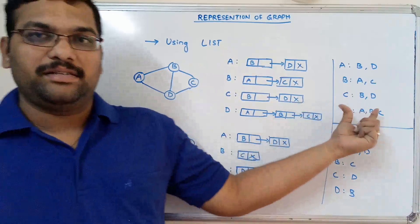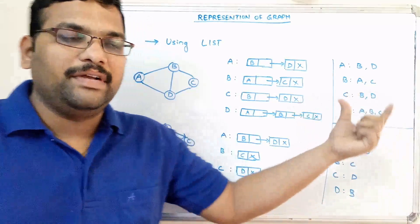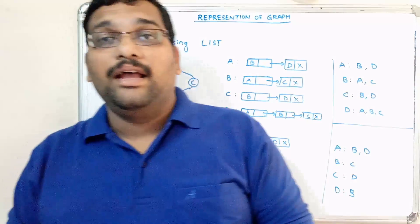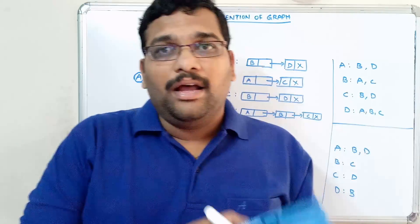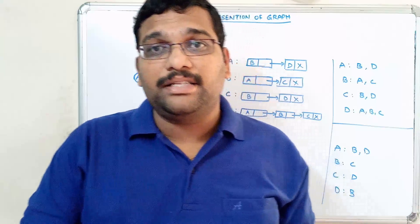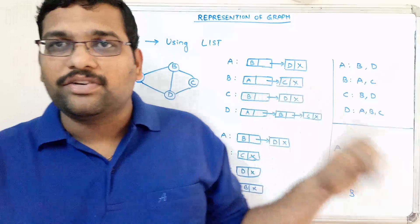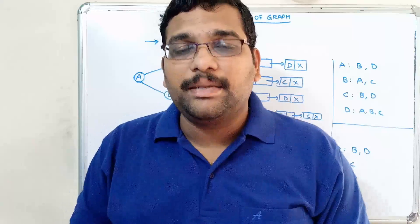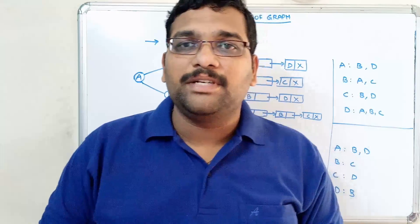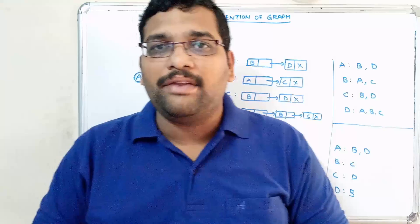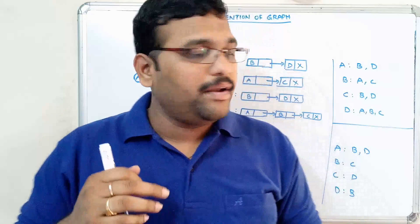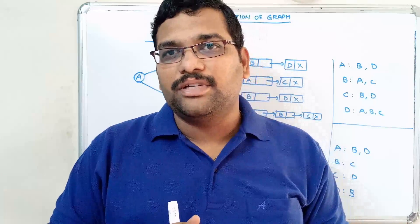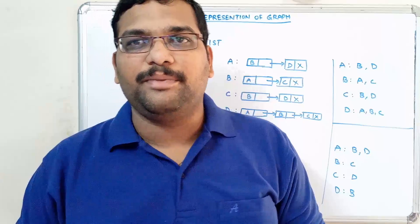So you can find these two ways. In different ways we can represent the graph using a list. This is how we can represent any graph using multidimensional arrays — the adjacency matrix — as well as the list concept. I hope you understood this session. If you have any doubts regarding this representation, feel free to post in the comment section and I will definitely try to clarify all your doubts. If you liked my sessions, share with your friends and don't forget to subscribe to our channel. Thanks for watching. Thank you very much.